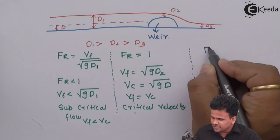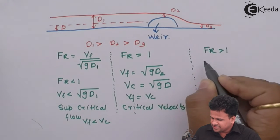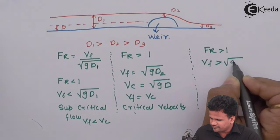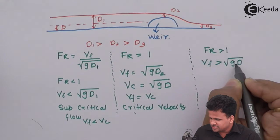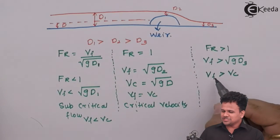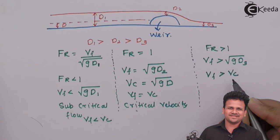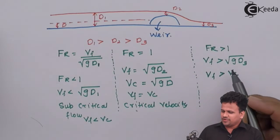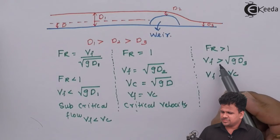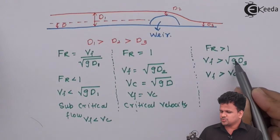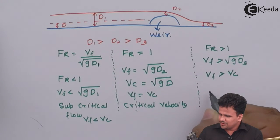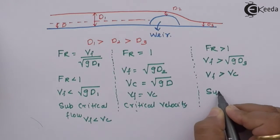If the Froude number is greater than 1, that means the velocity of the fluid is greater than √(G × D). This flow is called supercritical flow.